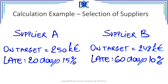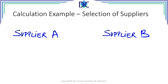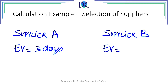Let's have a look and see how you did it. The expected value for supplier A: it was 20 days with a probability of 15%, so the expected value is equal to three days. Now for supplier B, we apply the same principle: supplier B is known to be late by 60 days with a probability of 10%, so 60 times 10% is six days.